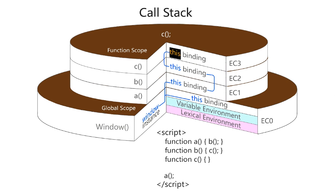One thing to notice is that because function `a` was called within the global scope, you'll have a chain of `this` bindings all the way up to function `c`, which is the last one to be called. Function `c` will also have its `this` keyword chained all the way back to the original window object — again, because it was called from the global scope.